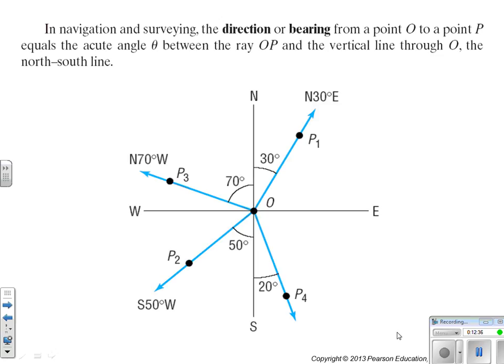Navigation and surveying. The direction or bearing from point O to point P is the acute angle between the ray OP and the vertical line, that is the north-south line. So, if you're talking what is the bearing or the direction from O to P, you would say it's 30 degrees. What is the bearing from O to P2? So, what is the angle between the north-south line and P? That's 50 degrees. The bearing between 0 and P3 is the angle between the north-south line and P3, which is 70.